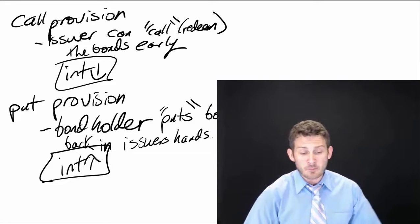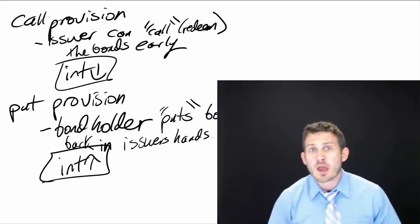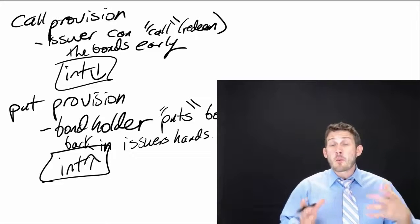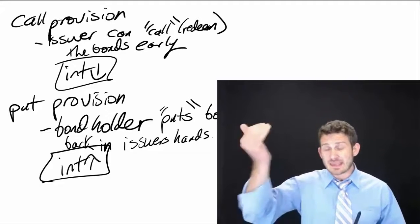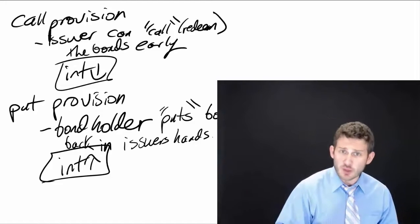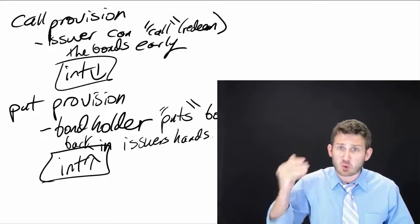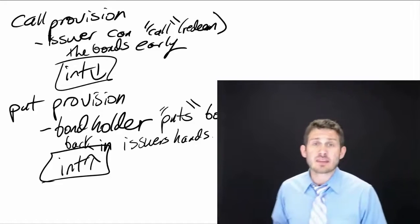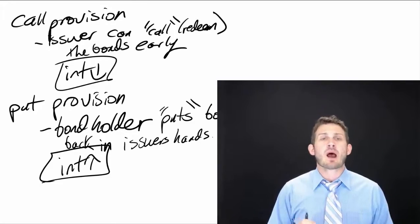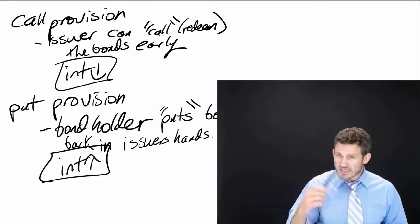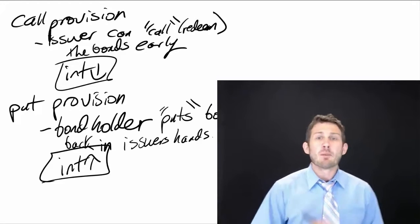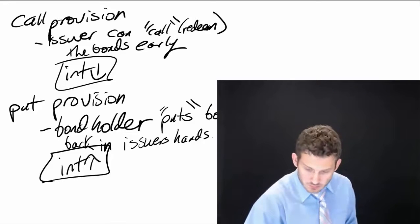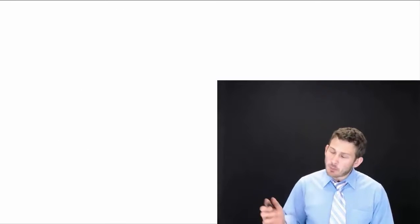These two provisions — call and put — are the most important because they can really influence value. They will be set in the indenture according to a certain schedule, specifying when you can call or put them and at what price. The investors and issuers then decide when they want to exercise them. Valuation is a bit more complex, but we'll be getting into bond valuation shortly.